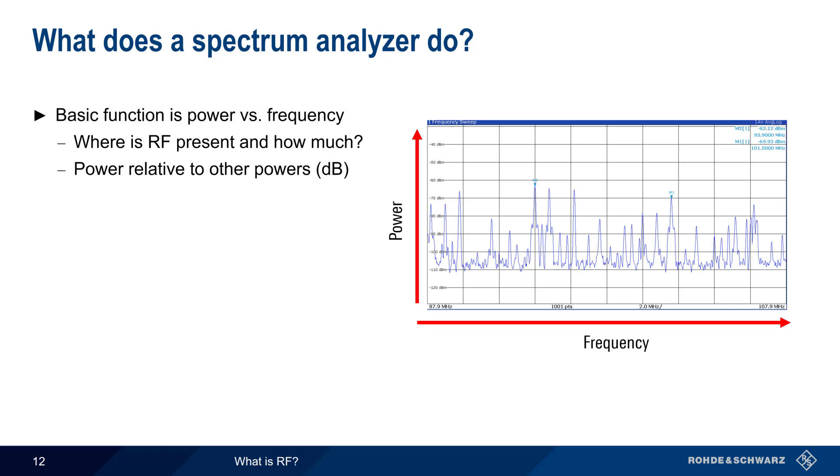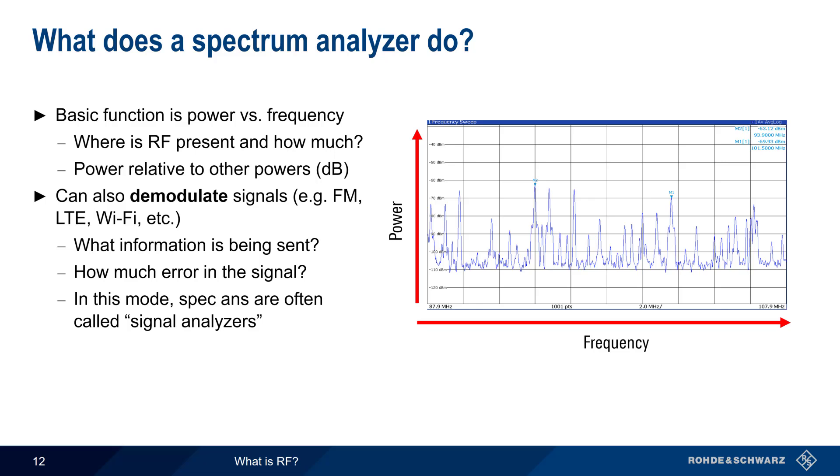In addition to the basic power versus frequency display, many spectrum analyzers can also demodulate different types of signals. These can be very basic analog signals, like those used in FM radio, or it can be quite complex digital signals, like those used in LTE, 5G, Wi-Fi, etc. Demodulation means extracting the information in a signal, but can also be used to tell us things like how much error or inaccuracy there is in a modulated or information-carrying signal. When a spectrum analyzer is used in this way, it is often referred to as a signal analyzer.